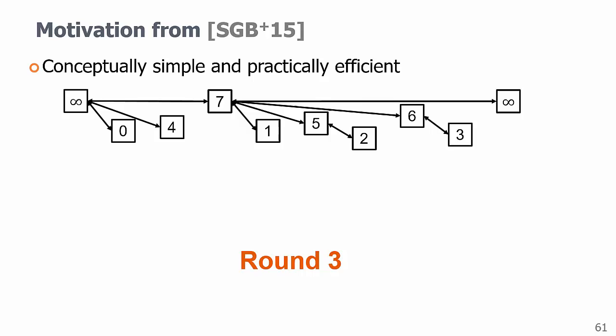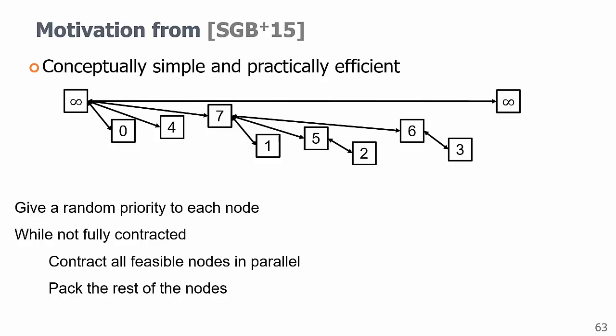Conceptually, this algorithm is very simple. We give a random priority to each node and we contract all feasible nodes in rounds and pack the rest of the nodes to guarantee work efficiency until the list is empty.